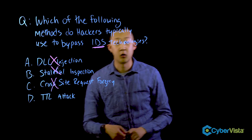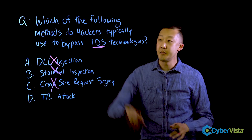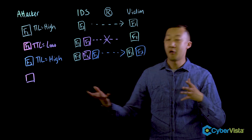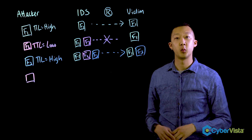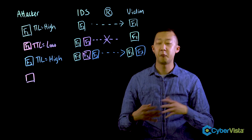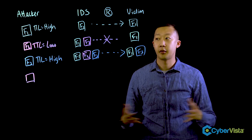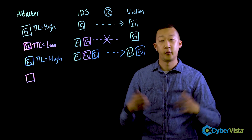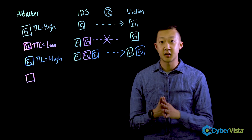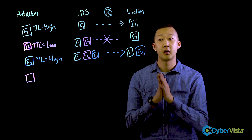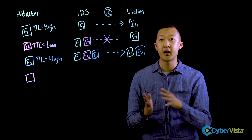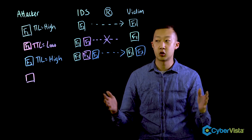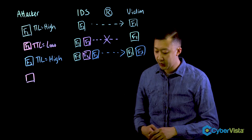That leaves us with TTL, or time to live attacks. I populated this board with a little diagram so we can go through a fast and furious look at what TTL is and how attackers use it. TTL is essentially the time to live — a value given to a packet to determine how long, or to what distance, they can travel. And then ultimately they're dropped.